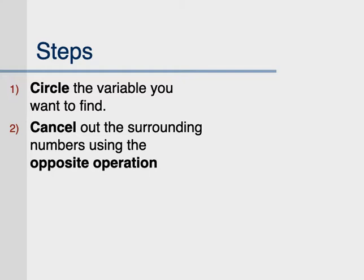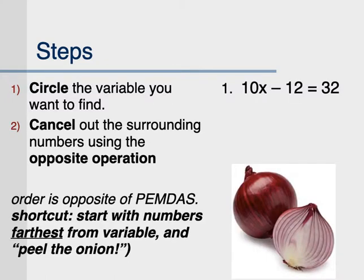Here's the deal with Step 2. There's often more than one surrounding number near your variable that you have to cancel out, and it matters which one you cancel out first. In fact, if you cancel out in the wrong order, you actually get the wrong answer. So this part is important. Copy down this tip: the order that you cancel out in is always opposite of PEMDAS, order of operations.